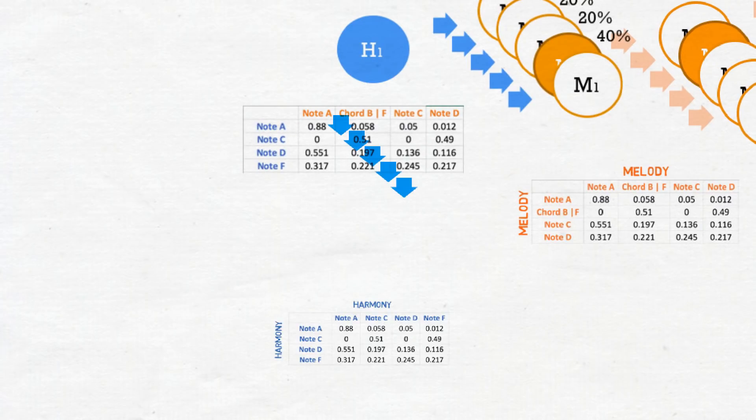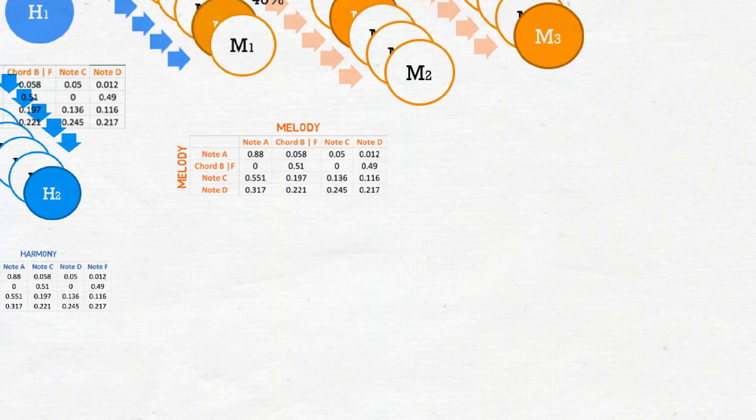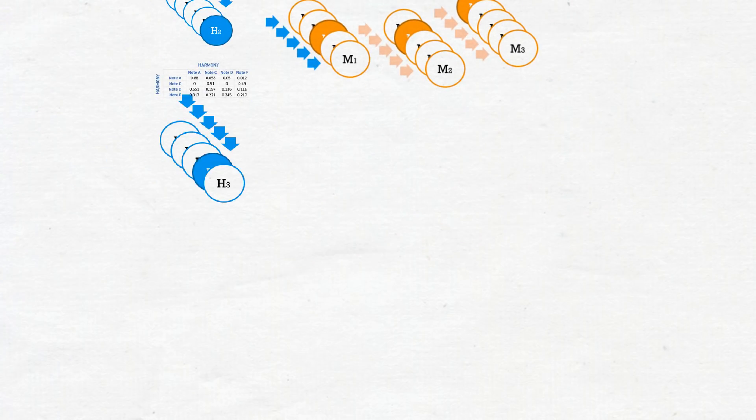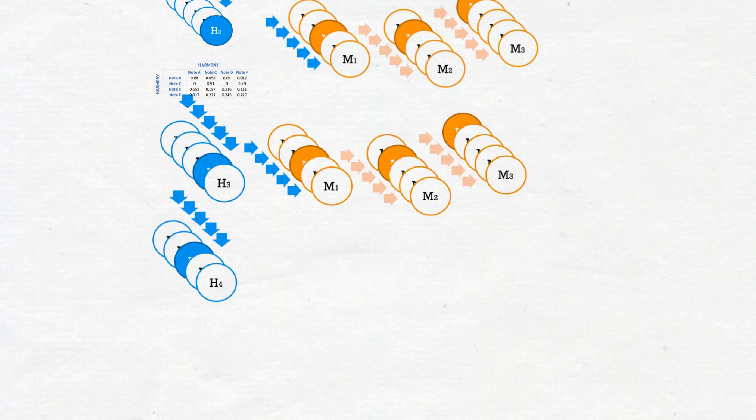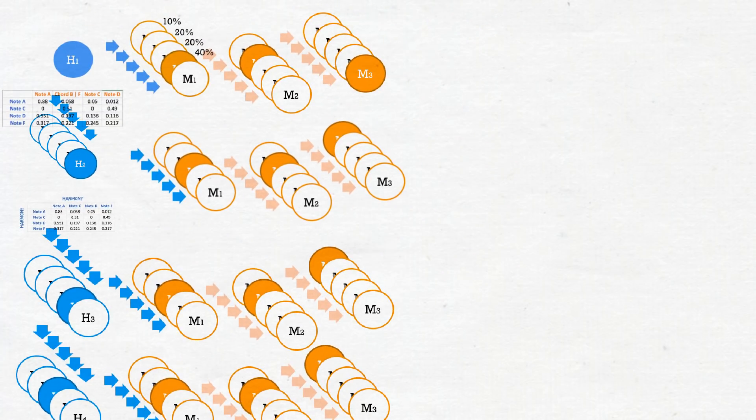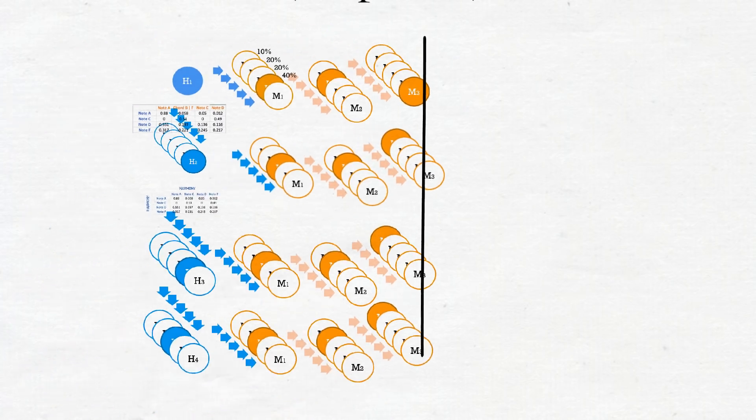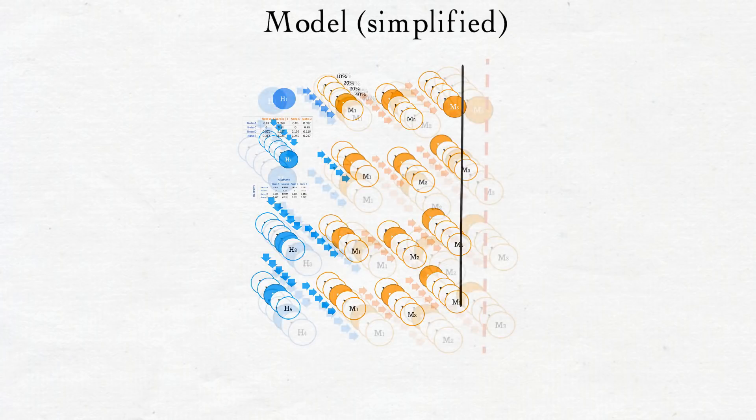This chain will happen vertically as well. The first harmony note will be responsible for selecting the next harmony note with the same procedure. And that harmony note will be responsible for initiating a chain of the next melody notes. And so on. I put in place a cutoff line, so that my model doesn't generate notes forever, and for my song to end at some point.